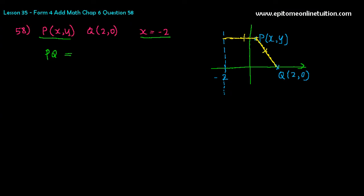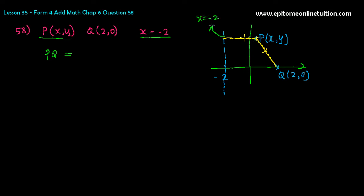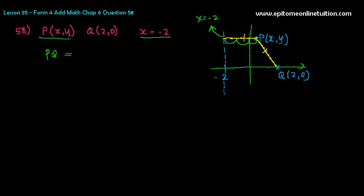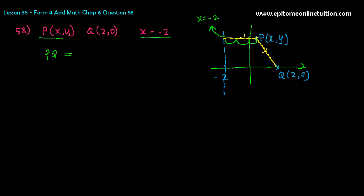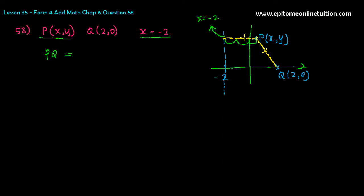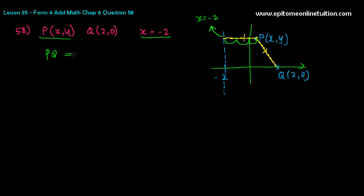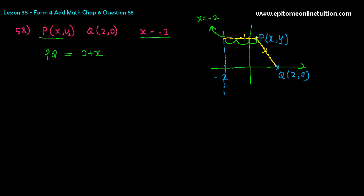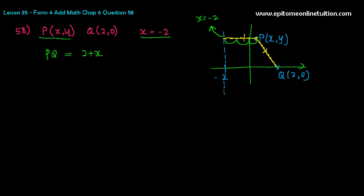Now, do you know how to find the distance between point P and the line x equals negative 2? Can you see that the distance is negative 2, then whatever the x-coordinate of point P is — it's not 3, it's 1, 2, and x. So the distance would be 2 plus x, or equivalently x minus negative 2. A lot of students cannot see this without drawing the diagram, so just sketch it out: the distance from P to the line x equals negative 2 is 2 plus x.